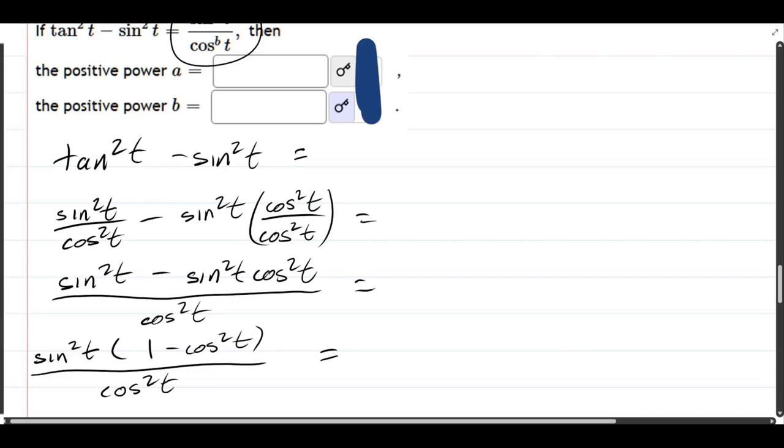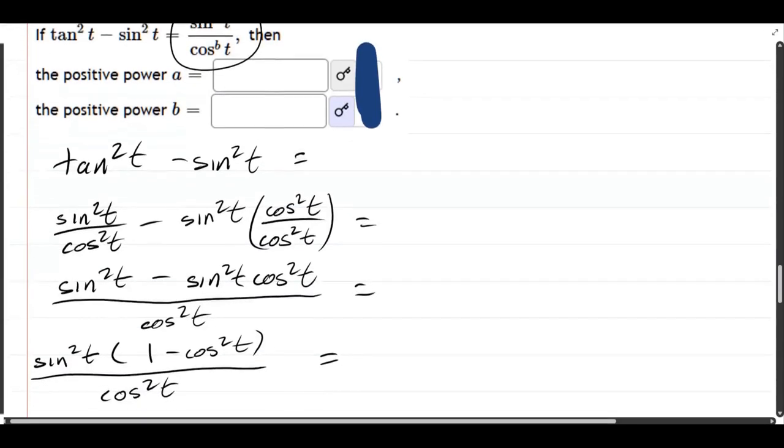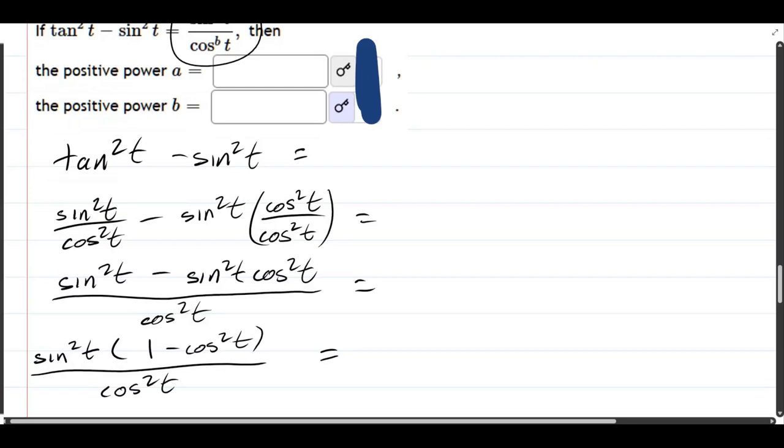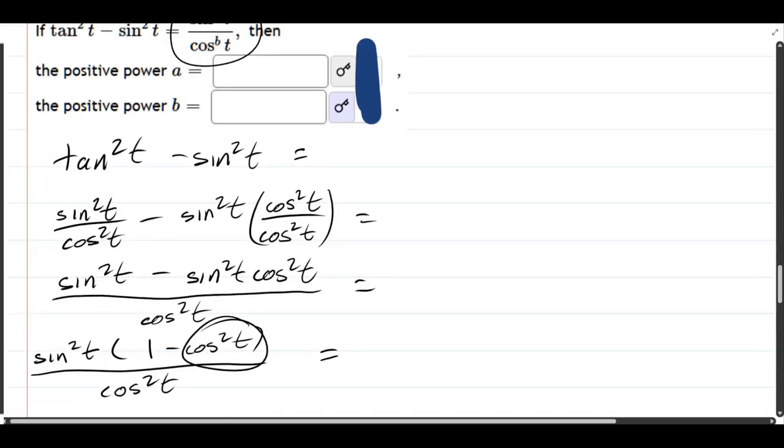What to do here? Well, we have 1 minus cos squared. We need, let's look at our goal. We need to have sine to a power in the numerator and cos to a power in the denominator. Our denominator is okay right now, but our numerator is supposed to just have sine and not have this cosine in there. So, how are we going to get rid of that cosine?